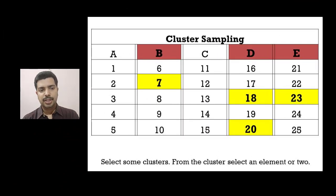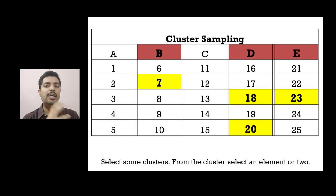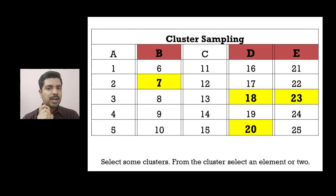Look at this table. There are 25 respondents, numbered 1 to 25, divided into five different clusters. First, you select any three clusters — that number is based on the researcher's intuition. From those clusters, you take one or two elements based on simple random sampling. In this example, I selected clusters B, D, and E. From B, I took one; from D, I took two; and from E, I took one. This is how you administer cluster sampling.